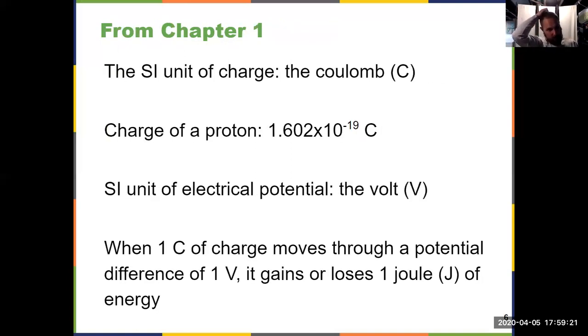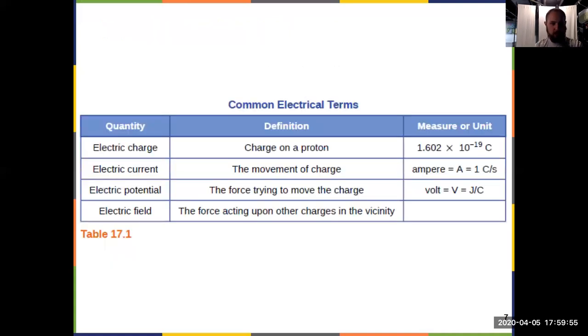We need some units as well. This is the first time we've seen the coulomb since Chapter 1. So the SI unit for charge is a coulomb. Charge on a proton, 1.6 times 10 to the negative 19 coulombs. Unit for electrical potential is volt, represented by the symbol V. And these two terms relate to the energy unit we've seen plenty, the joule. When one coulomb of charge moves through a potential of one volt, it either gains or loses one joule of energy. And all of that information is summarized nicely in Table 17.1, electric charge current, potential field, their definition, and corresponding units. That's all the information you need from 17.1.